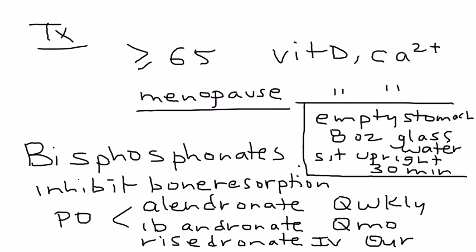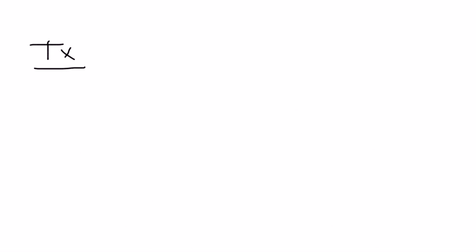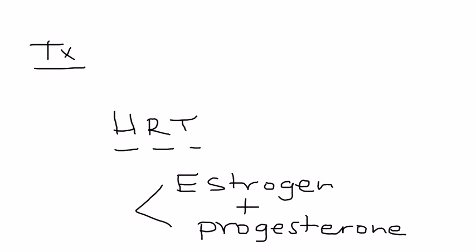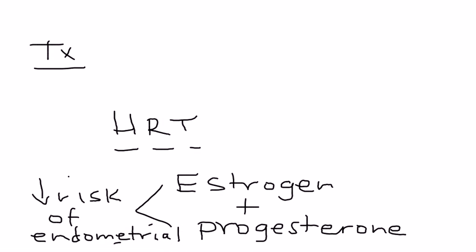You have to sit upright for 30 minutes after taking the oral bisphosphonates. Those specific instructions apply to alendronate and ibandronate. In addition to bisphosphonates, you also want to recommend hormone replacement therapy, given as estrogen and progesterone together. The reason you give progesterone in addition to estrogen is to decrease the risk of endometrial cancer.